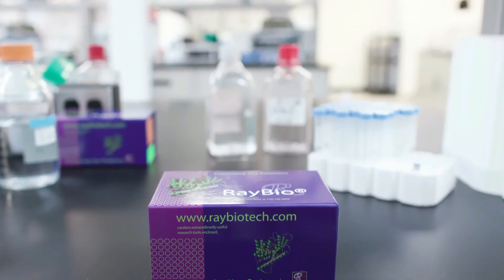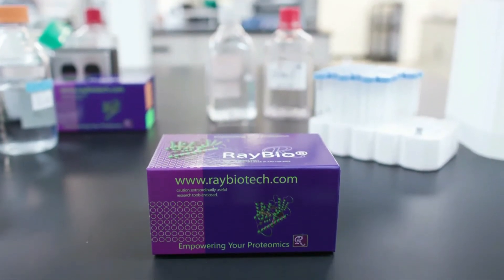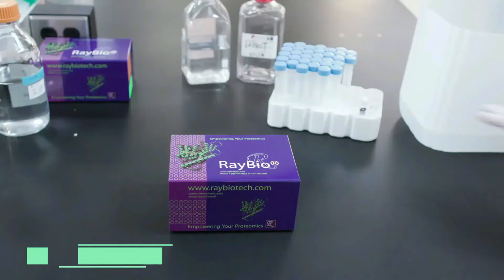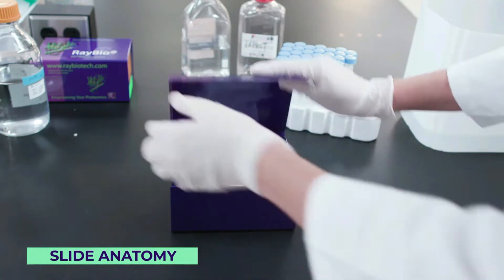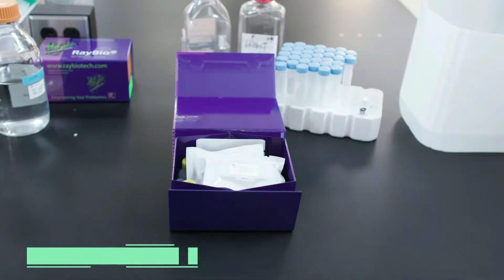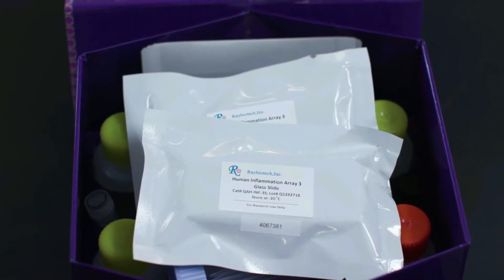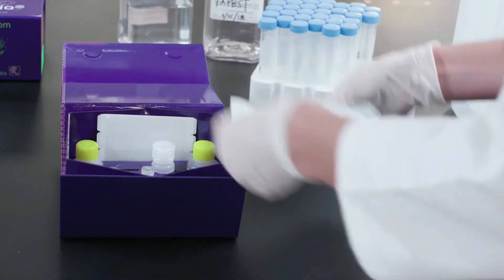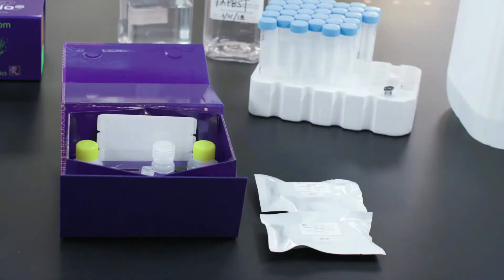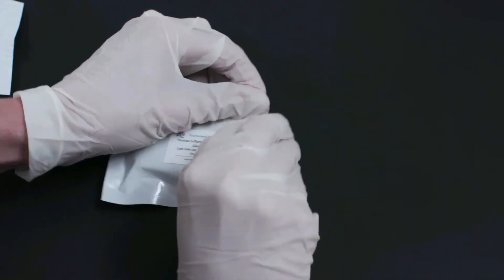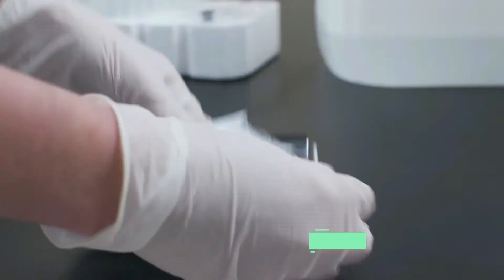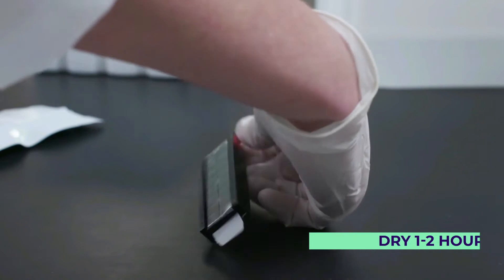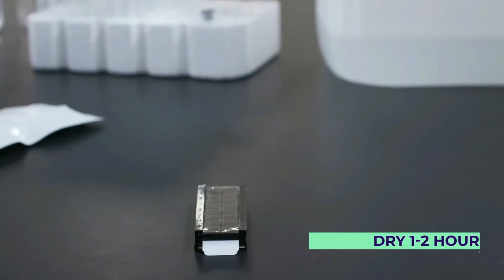Hi researchers. This video is an overview of best practices for handling RayBio glass slide antibody and protein arrays. After removing your array kit from the freezer, let the slide equilibrate to room temperature for 20 to 30 minutes before opening the bag. After unwrapping, the slide should be completely air dried before use, which usually takes one to two hours. This step is very important as residual moisture can result in smearing of the antibody spots.